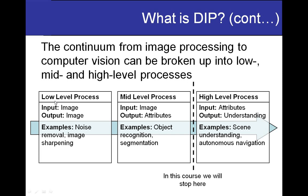In low-level image processing, an image is given as input to some algorithm and the output is another image — specifically a more enhanced or better image. Examples include removing noise from an image, sharpening an image, image enhancement, and image restoration. In mid-level image processing, the input is still an image, but the output is attributes extracted from that image rather than another image. We do not get another image; instead we identify some attributes within that image.